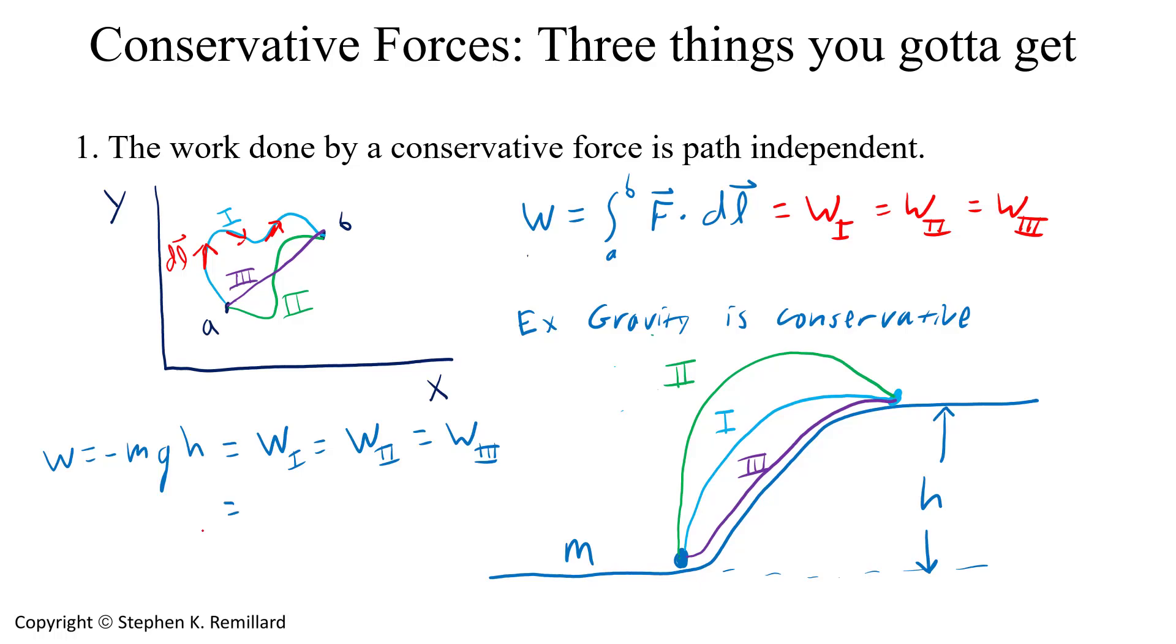That work done also indicates the change in potential energy. mgh is the final potential energy. Zero is the initial, minus the change in gravitational potential energy is the work that was done. And that is the second characteristic of a conservative force, that it has an associated potential energy.